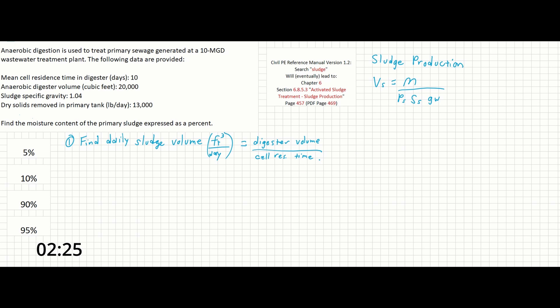This value is sometimes given as theta C. Our digester volume is 20,000 cubic feet and our cell residence time is 10 days. So this gives the daily sludge volume at 2,000 cubic feet per day.